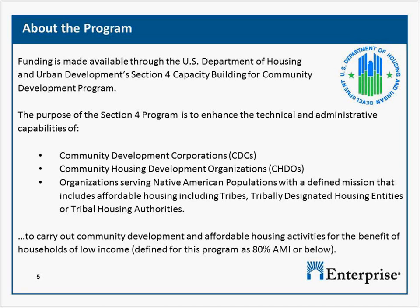Enterprise's mission is to create opportunity for low and moderate income people through affordable housing in diverse, thriving communities. Funding for this grant program is through the Department of Housing and Urban Development Section 4 Capacity Building for Community Development Program, which we'll refer to as Section 4 from here on out. The purpose of the Section 4 program is to enhance the technical and administrative capabilities of community development corporations, or CDCs, housing development organizations, CHOTOs, and organizations serving Native American populations with a defined mission that includes affordable housing.